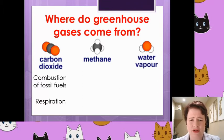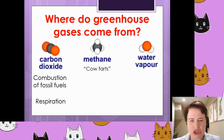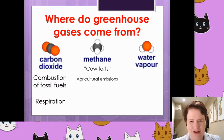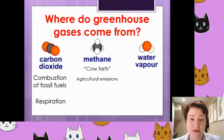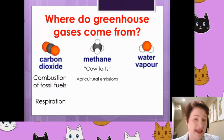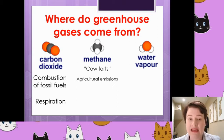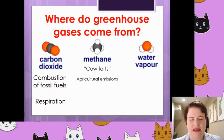Methane primarily comes from, as we talked about in the webinar, cow emissions — agricultural emissions. A better way of putting it is emissions from farms, in particular cattle farms. In addition to that, there are lots of places in Asia in particular that have rice paddies or rice fields, which can also produce a lot of methane. So it's farming essentially where methane is released in terms of the human impact.